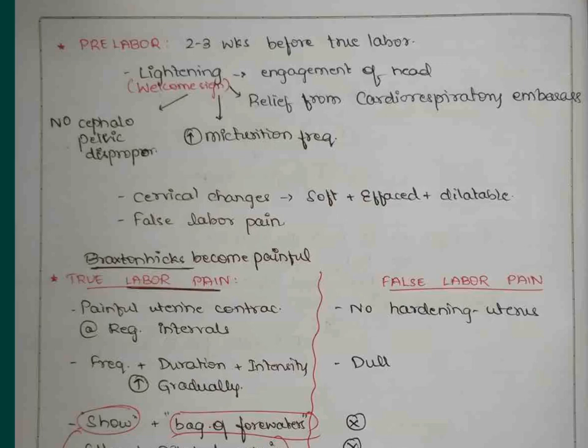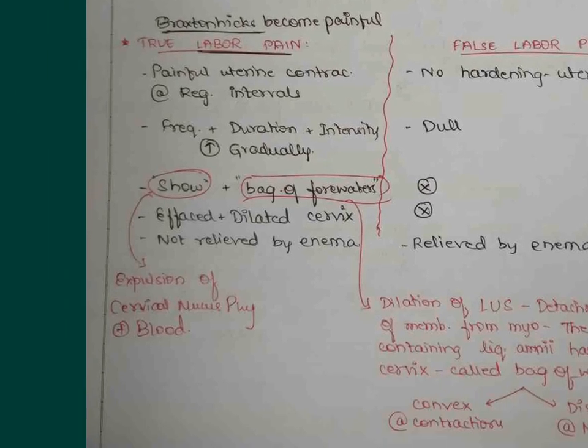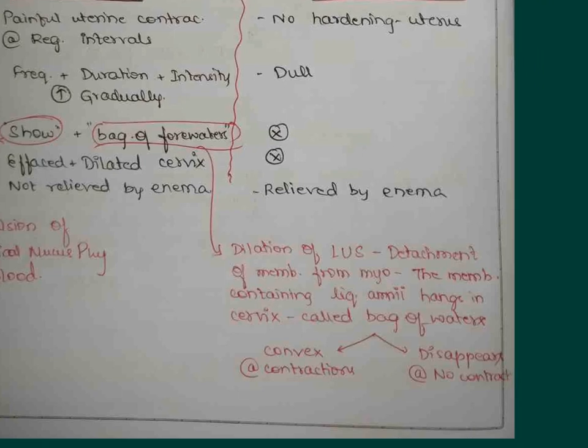Let us study how to differentiate between true labor pain and false labor pain. True labor pain will be painful uterine contractions at regular intervals which cause hardening during contraction and softening during relaxation. But it is not so in case of false labor pain, wherein there is no hardening or firmness of the uterus even during the contractions. The frequency, duration, and intensity goes on increasing with time, while in case of false labor pain it will remain just dull. There is show and bag of membrane in the true labor pain. Show is the expulsion of the cervical mucus plug as well as blood. The bag of membrane is the dilation of the lower uterine segment.